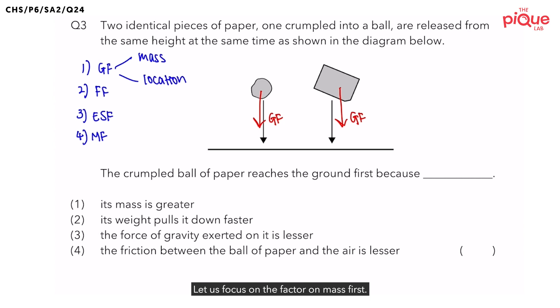Let us focus on the factor on mass first. If you read the question very carefully, you will realize that they mention that these two pieces of paper are identical, which means that their mass will be the same. What about location? Location is usually always the same unless stated otherwise. Since both the mass and the location is the same, what does this tell us about gravitational force acting on both pieces of paper? They are also the same.